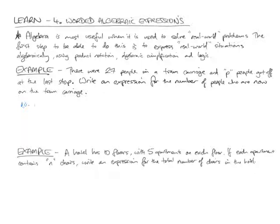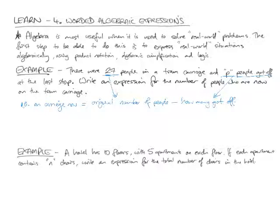Well, the number on carriage now is going to be the original number of people minus how many got off. We know this information: 29 is the original number, P people got off, and we're trying to find an expression for the number of people who are now on the tram carriage. That's what we're trying to find here.